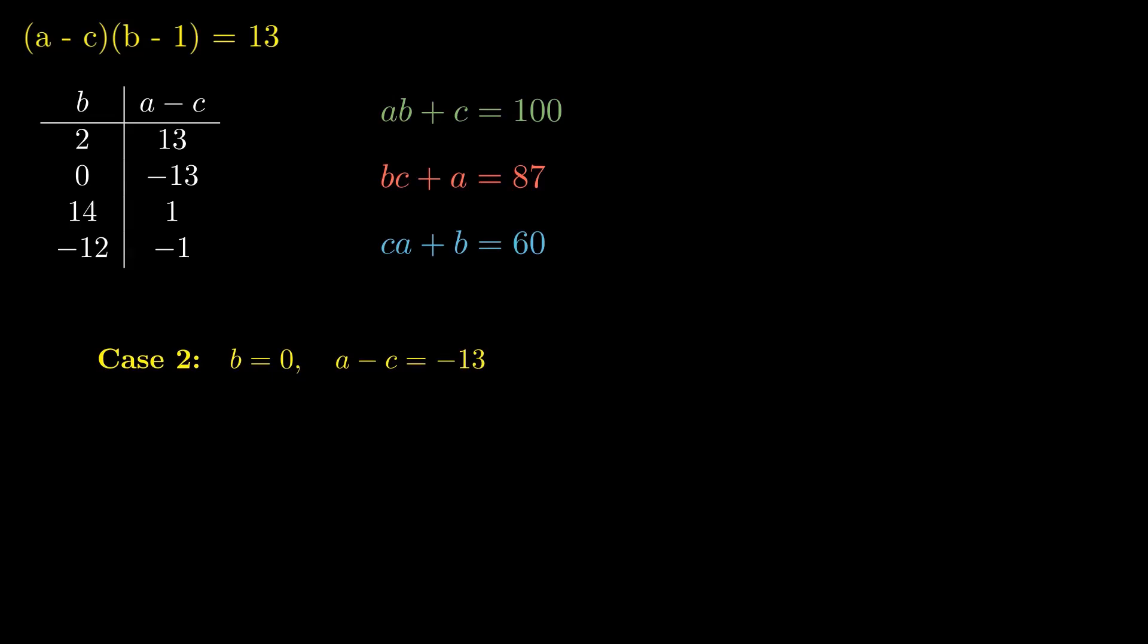Case 2. If B equals 0 and A minus C equals negative 13, we do the math, and we hit a contradiction. Another dead end. Okay, since neither of these work, we try more cases.